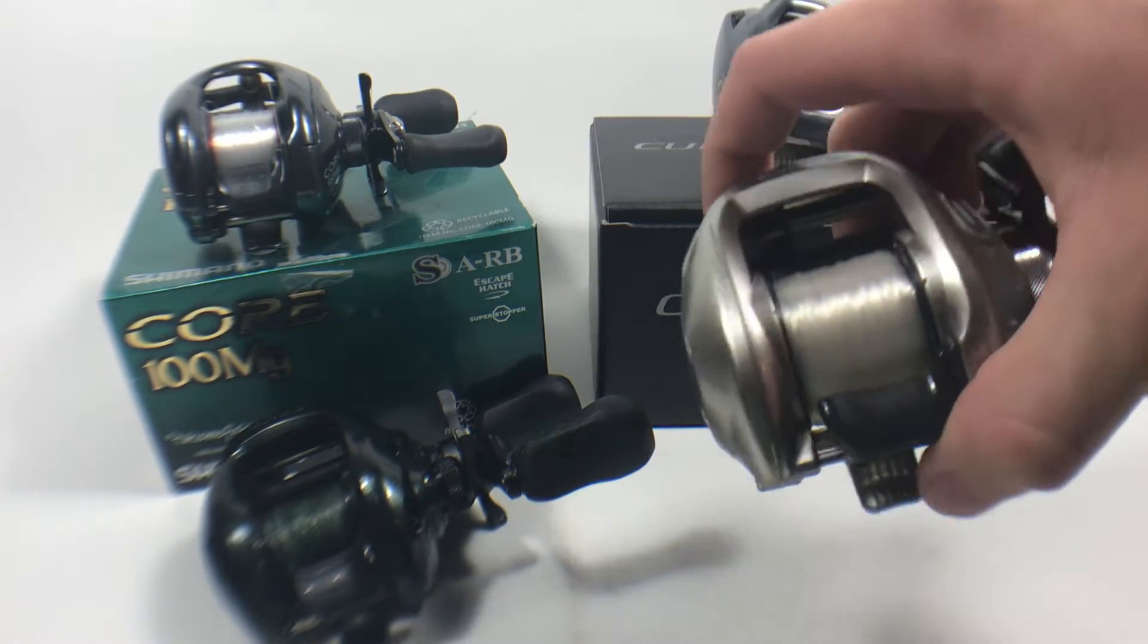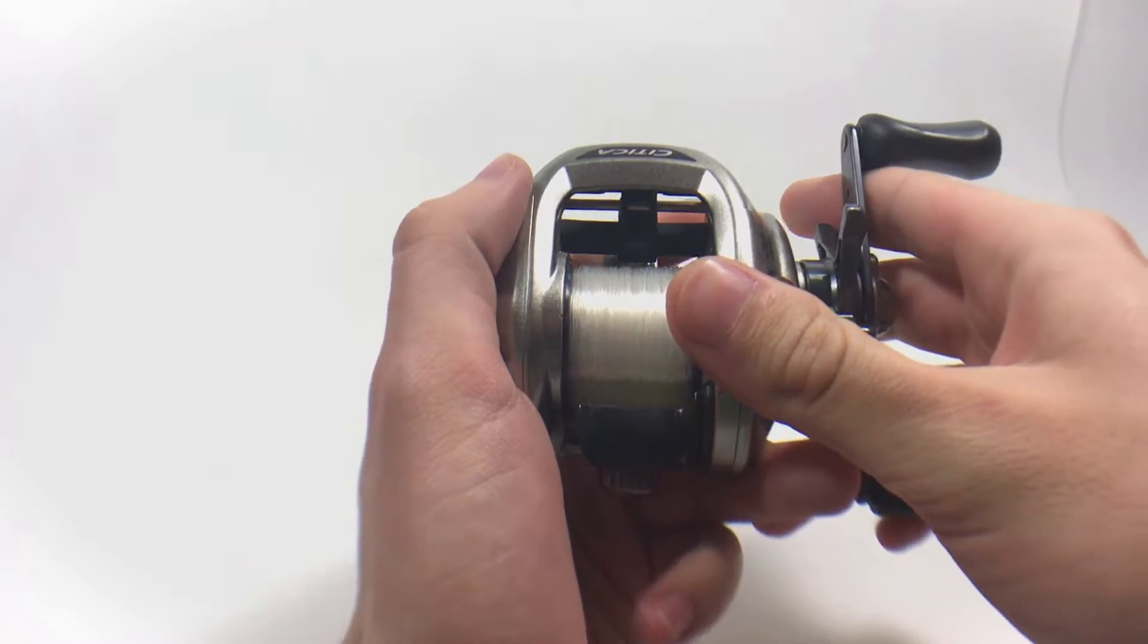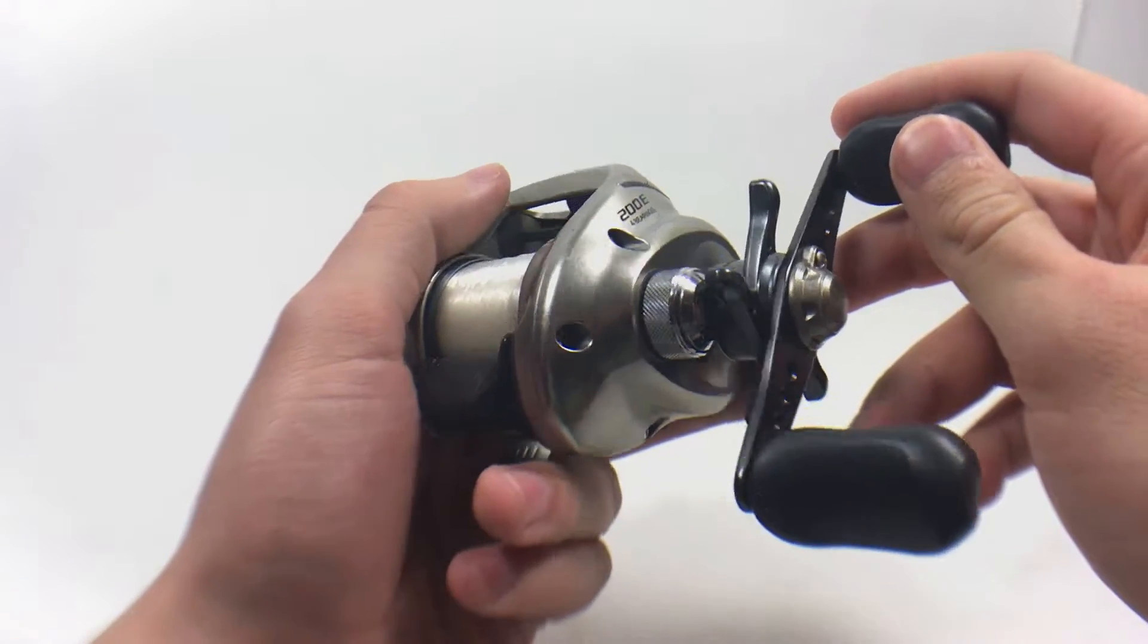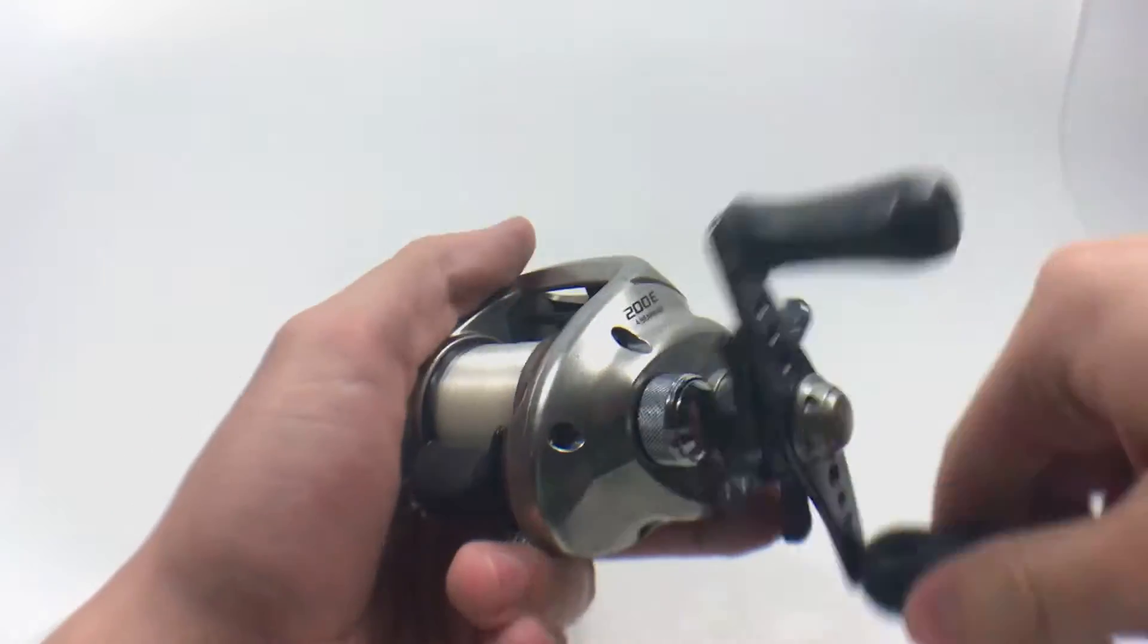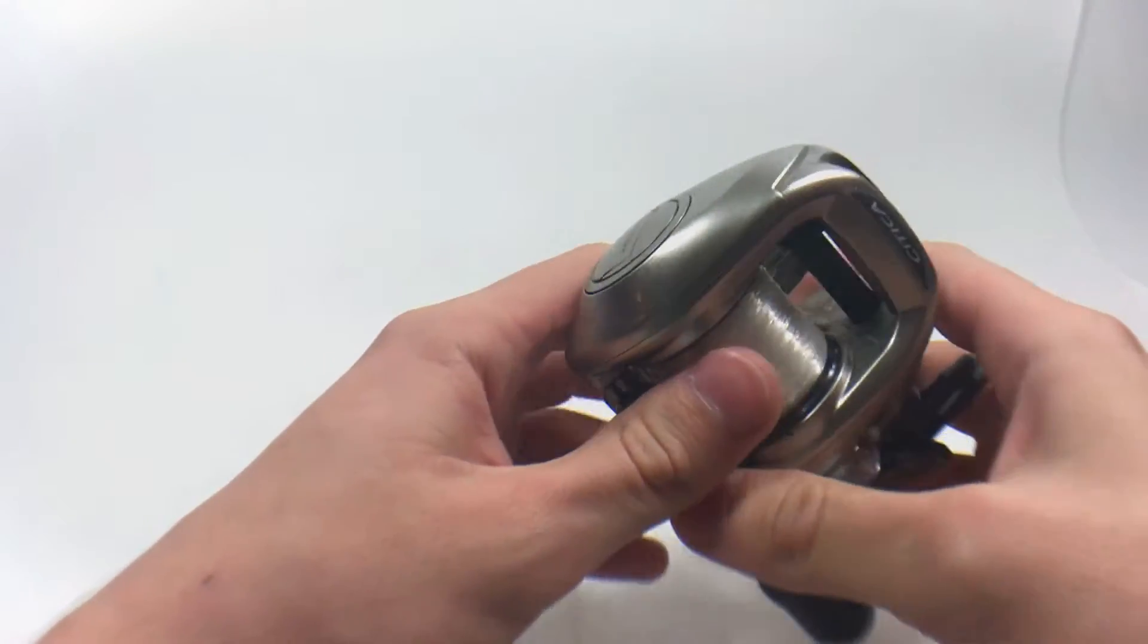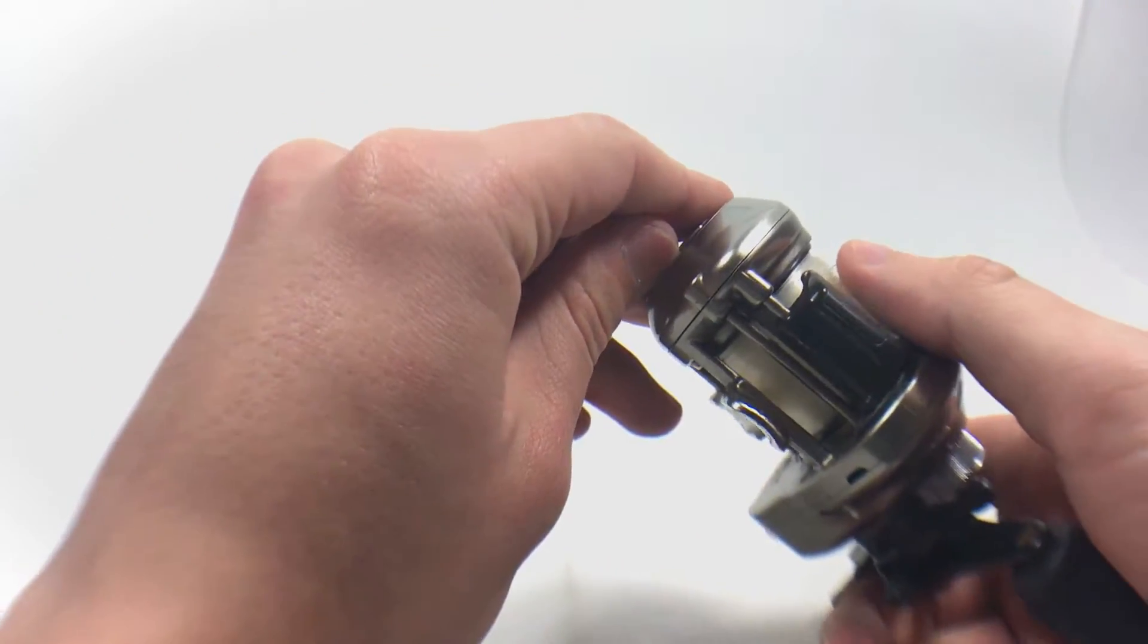So here is the Shimano Citica 200E. This is a reel that I've had for about 10 years, and I still use it. I've never really felt the need to move on from this reel because it still flat-out does the job. Super smooth, still casts good. This reel is one of the reasons why I trust Shimano so much.